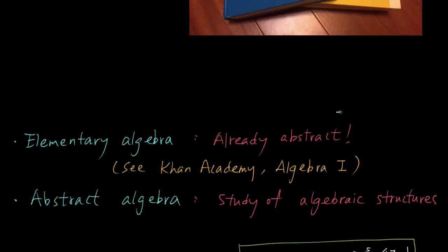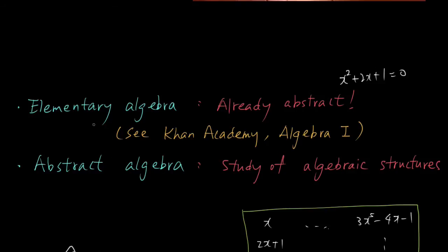We study things like polynomial equations, like x squared plus 2x plus 1, let's say equals 0, and that is an abstraction. In fact, Sal on Khan Academy also talked about this abstractness and beauty of algebra. So I highly recommend having a look at that. It's in the algebra 1 section. So that is elementary algebra. And what about abstract algebra?